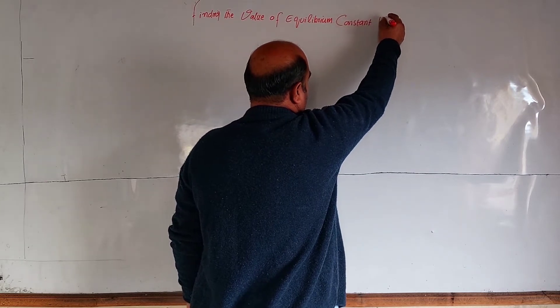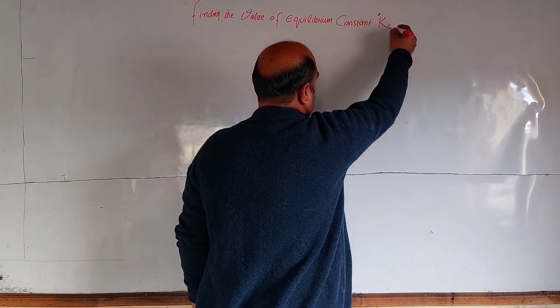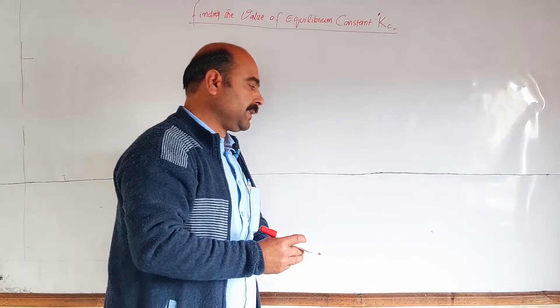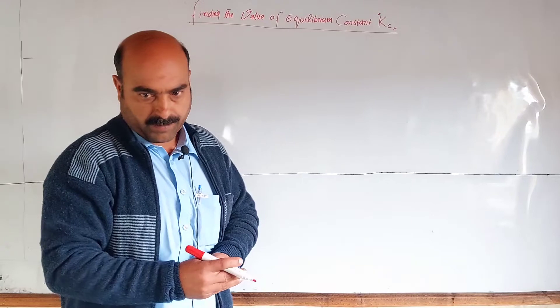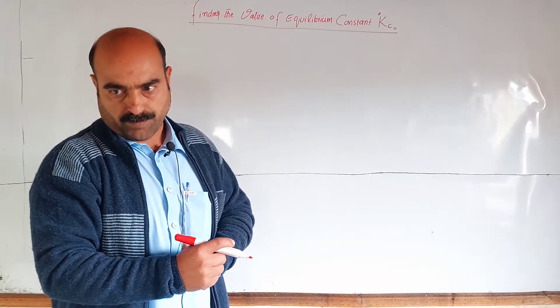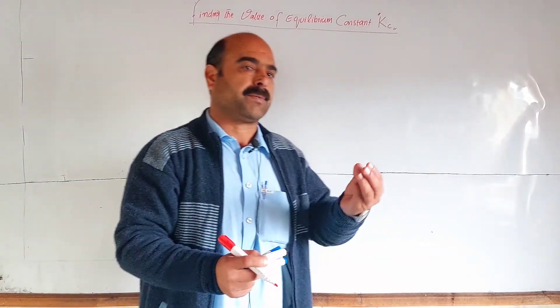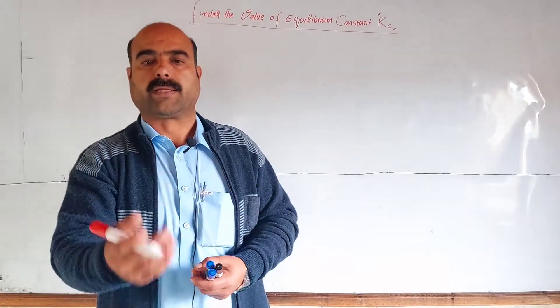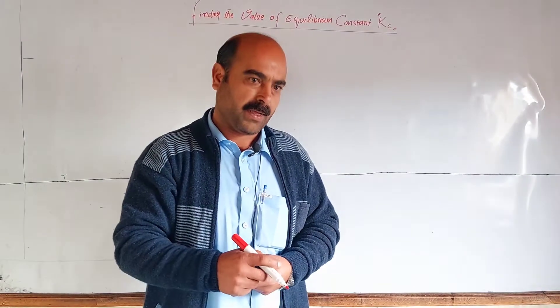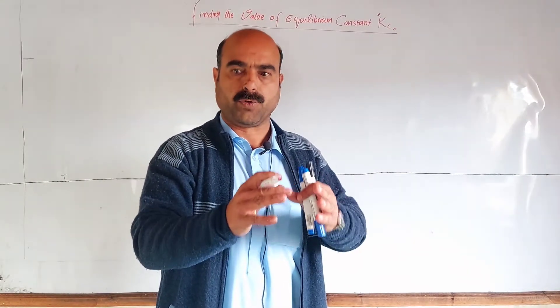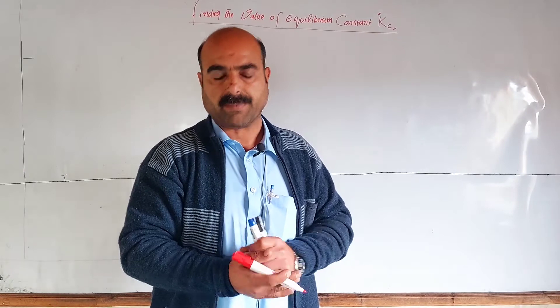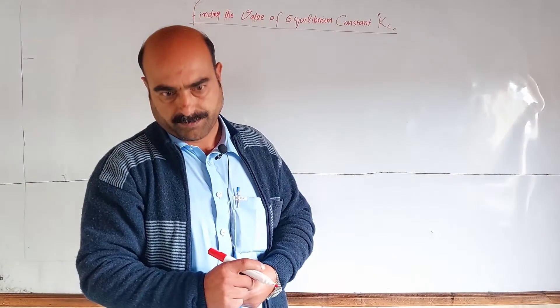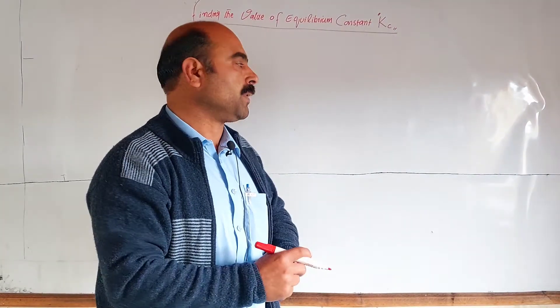The equilibrium constant Kc value we determine experimentally. At equilibrium state, the concentration of reactants and concentration of products, these values we put into the equation in mathematical form, the law of mass action. These values we put and calculate.